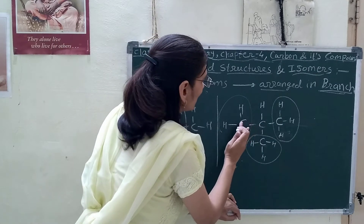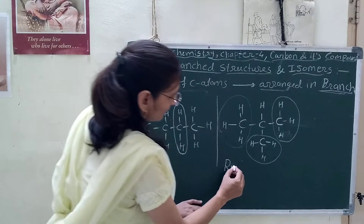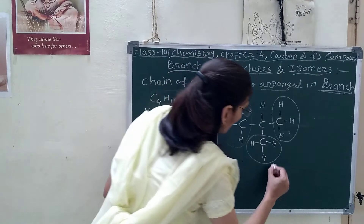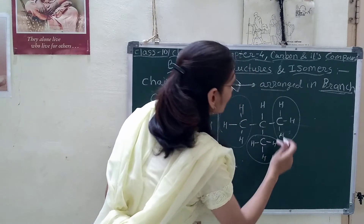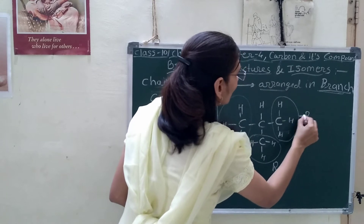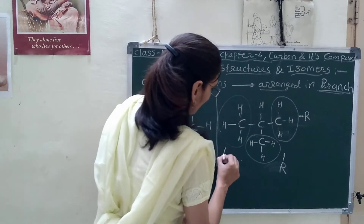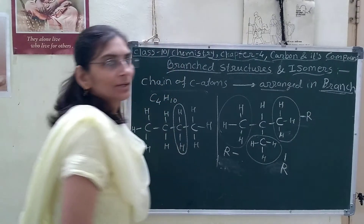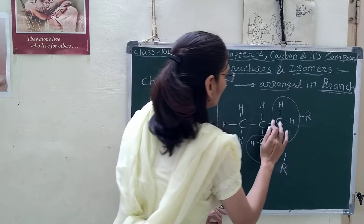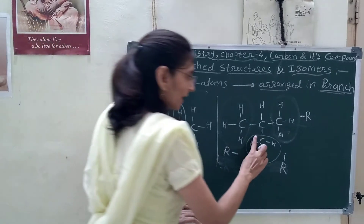CH3 hai toh 1 valency remaining ho gai — CH3 group. So 3 R's are attached here. How? What is the name of this? We will consider one open chain only — the longest open chain we have to decide first. What is the longest open chain here? 1, 2, and 3. Any. Only 1 carbon atom is attached as branch and the rest is the open chain. Longest open chain.